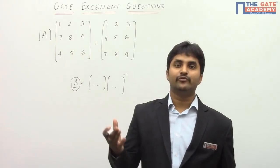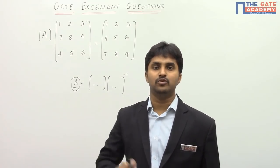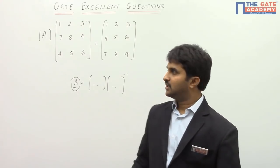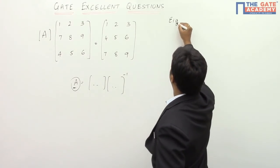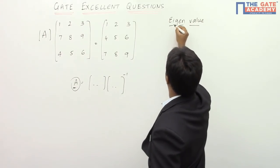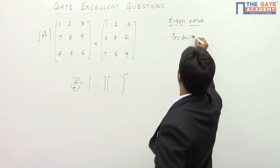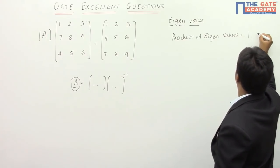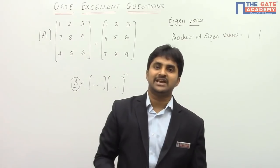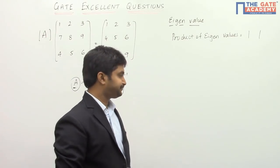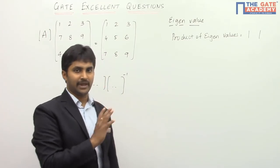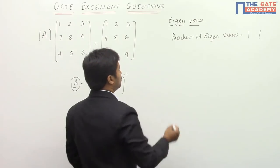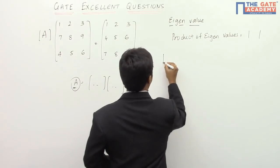The better method — the trick here — is to take the determinant on both sides. You have to use the determinant because in eigenvalues you know that the product of eigenvalues is equal to the determinant of the matrix. That is the logic behind applying this. So we apply determinant on both sides. If we do that, we have determinant of A multiplied by the determinant of the matrix [1, 2, 3; 7, 8, 9; 4, 5, 6].